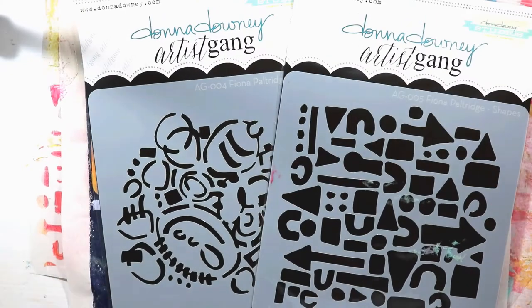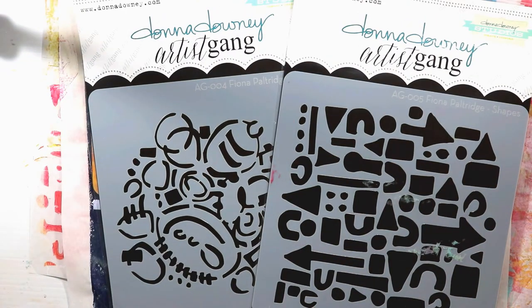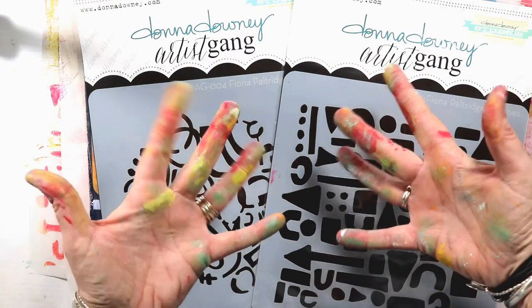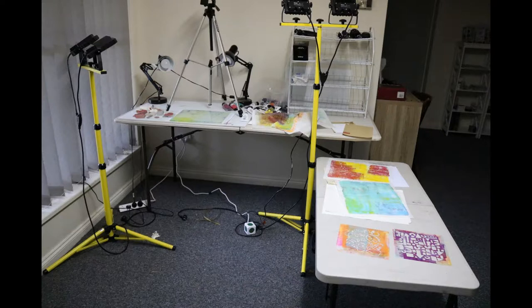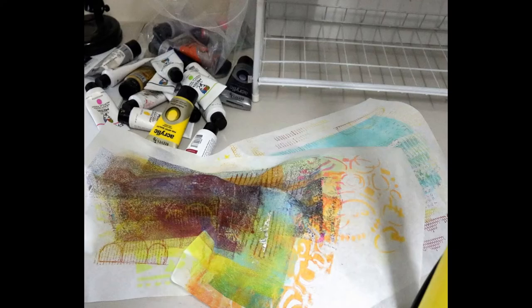So thank you guys. That's how I've used my Donna Downey Artist Gang stencils. Look at those beautiful colored hands. Here's my display of everything left over. This is my setup. This is what it looks like. It's a mess. Yep, there's my paint, and there's my final piece.